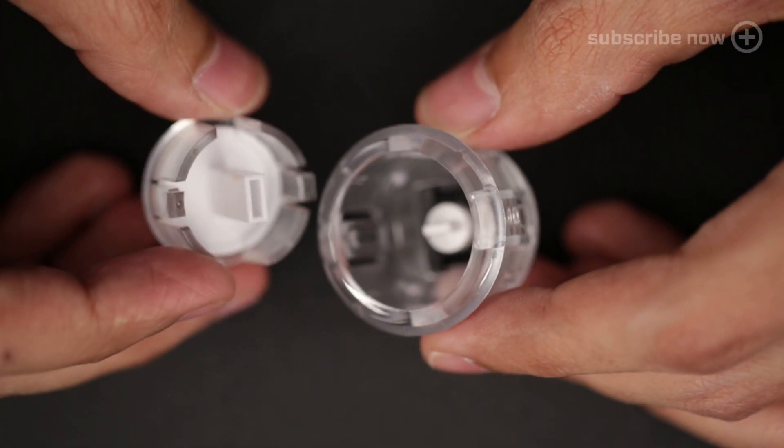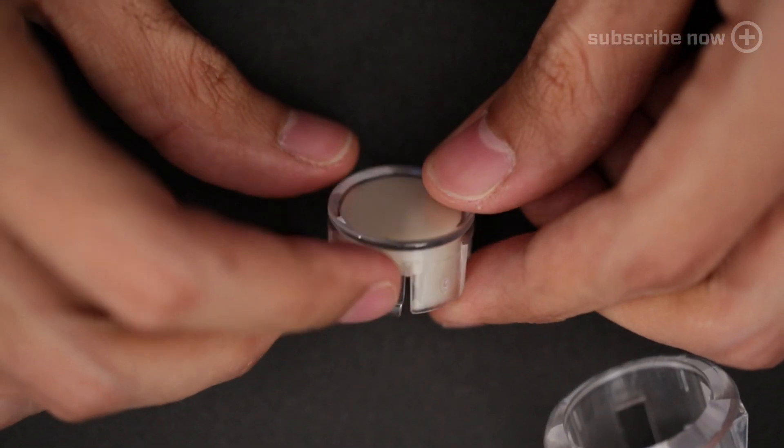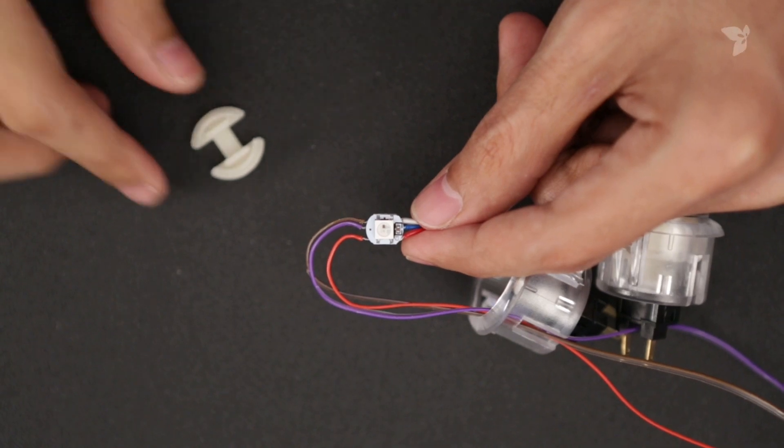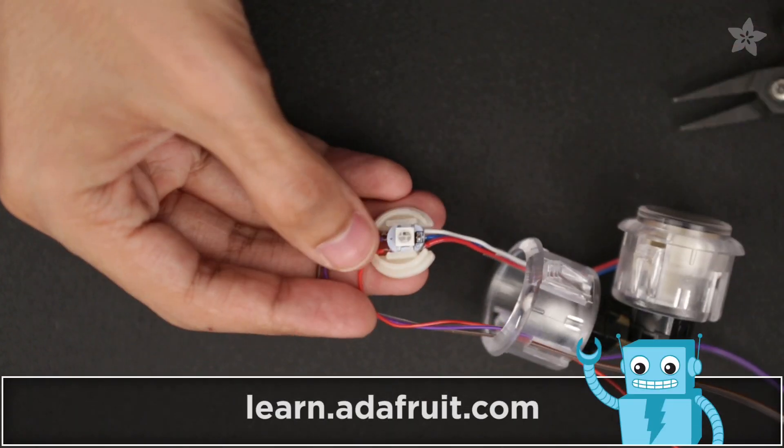The arcade button's very modular and actually pretty easy to take apart. Our 3D printed parts replace the stock diffuser and it's pretty simple to install. The mini NeoPixel PCB snaps into the connector piece with space for wires to pass through.